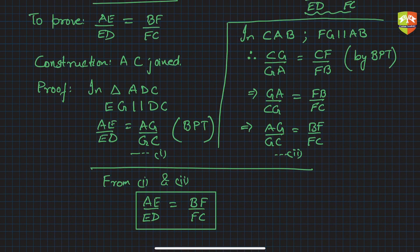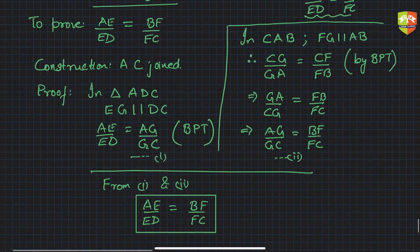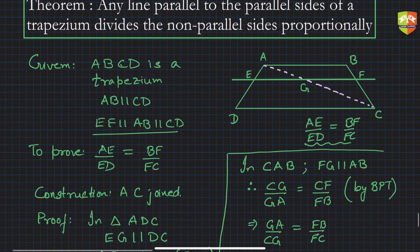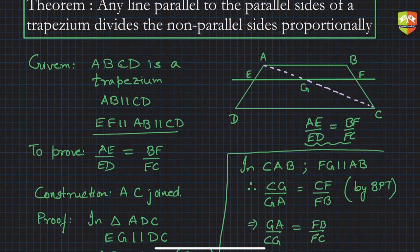So to summarize: in trapezium ABCD, AB and CD are the parallel sides. EF is a line parallel to those parallel sides. Therefore, the ratio AE by ED equals BF by FC — that is, a line parallel to the parallel sides of a trapezium divides the non-parallel sides proportionally. That's the theorem — a property of a trapezium.